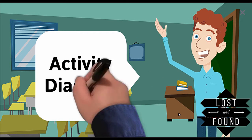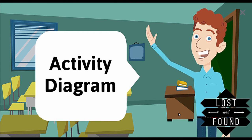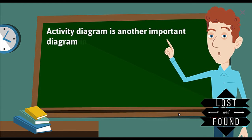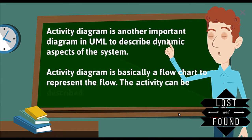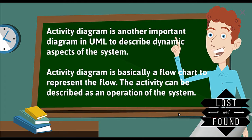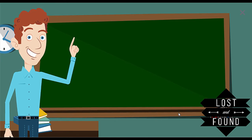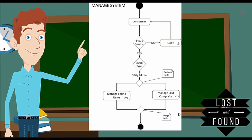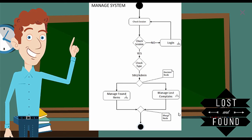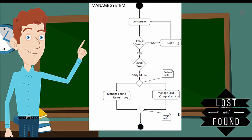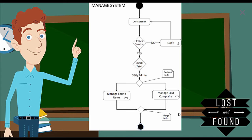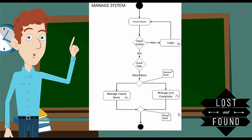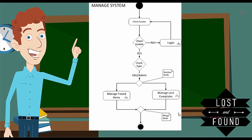After the use case and use case description, the next diagram is the activity diagram. An activity diagram is another important UML diagram used to describe the dynamic aspect of the system — it is basically a flowchart representing the flow, where an activity can be described as an operation of the system. In the manage system activity diagram, there is first an initial node showing the start. After that, a check session node checks the login session. If the user is not logged in, it redirects to the login activity.